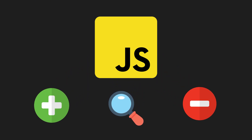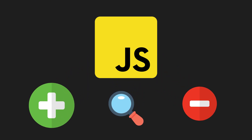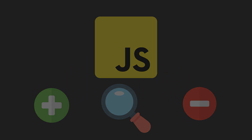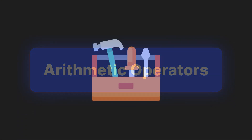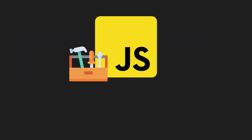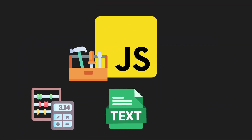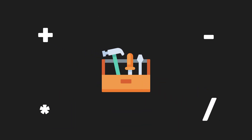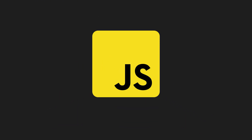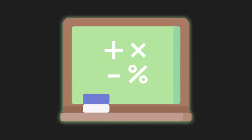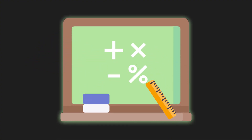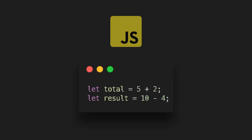Speaking of numbers, JavaScript also uses operators to perform actions like addition, subtraction, and even comparisons. Arithmetic operators are like the tools JavaScript uses to do things with numbers, text, and even logic. You can think of operators as symbols or commands that tell JavaScript to do something, just like how in math you use plus, minus, times, and divide signs to work with numbers. JavaScript has similar operators for that too.